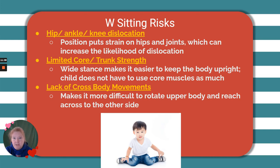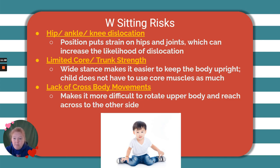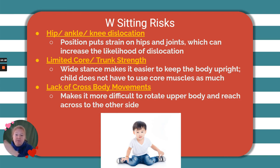Some risks of W-sitting: dislocations — hip, ankle, knee. The position puts strain on those joints, which can increase the likelihood of dislocation. It also limits core and trunk strength because that wide stance is a very stable position, so children don't need to use as much effort to keep their body upright and don't engage their core muscles as much. There's also a lack of cross-body movements — because it's such a stable position, it's more difficult to rotate the body and reach across to the opposite side, so the child will consistently just reach with the closest hand.